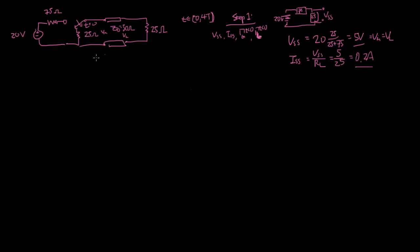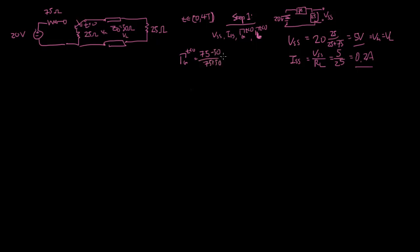We also have to find the reflection coefficients. On the generator side for t less than zero, γG is going to be (75 minus 50) over (75 plus 50) — new minus old over new plus old — which is going to be 0.2. And γL for t less than zero is going to be (25 minus 50) over (25 plus 50), which is going to be minus one third. So here we have the four numbers we need to finish step one.